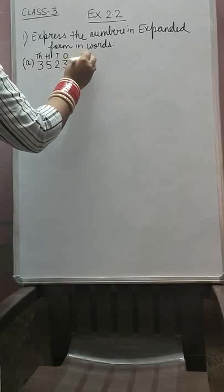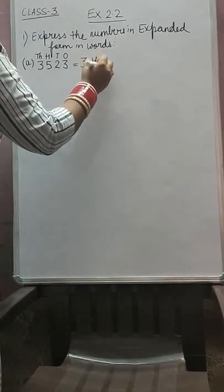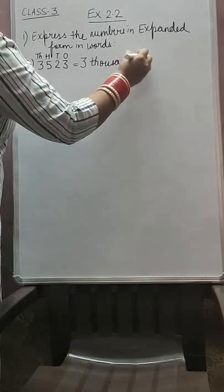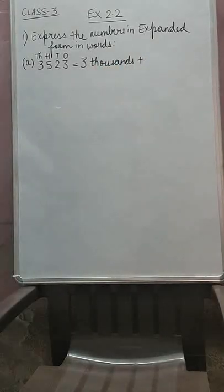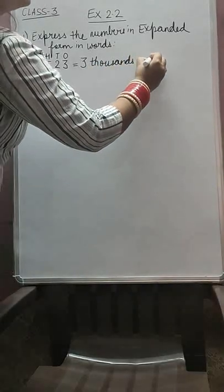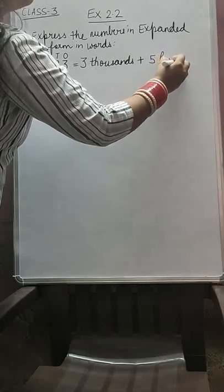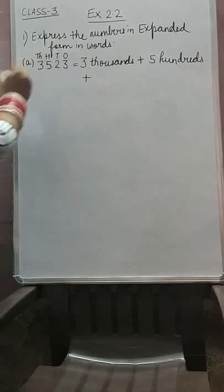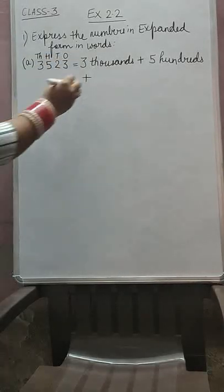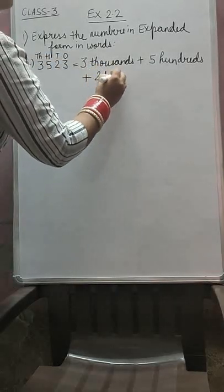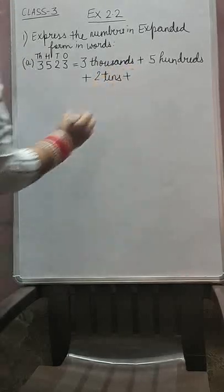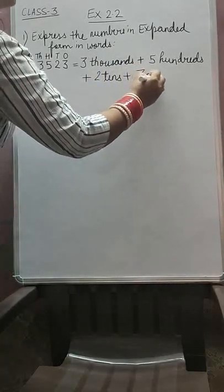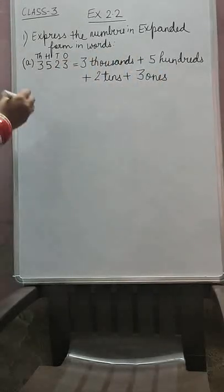How many 1000's we have? 3000's. So here we will write 3000's. How many 100's we have? 500's. So here I will write 500's. How many 10's we have? 2 10's. So I will write 2 10's. How many 1's we have? That is 3 1's.